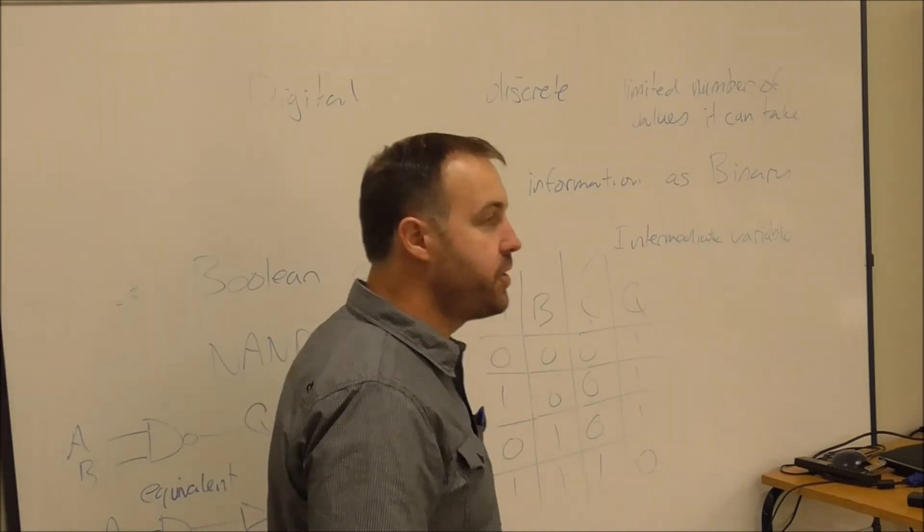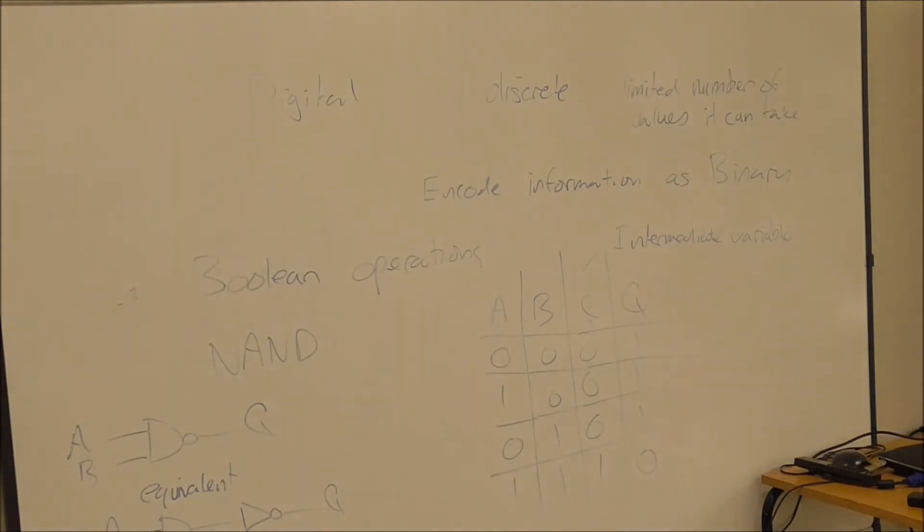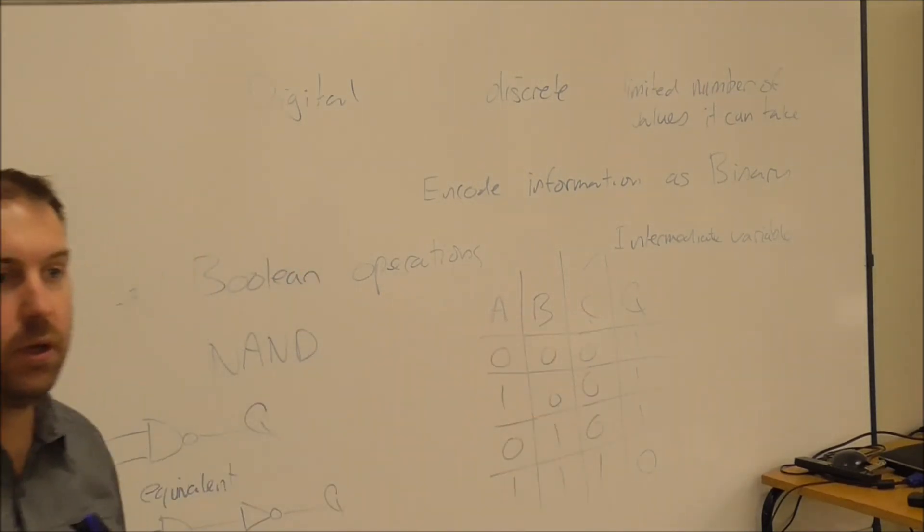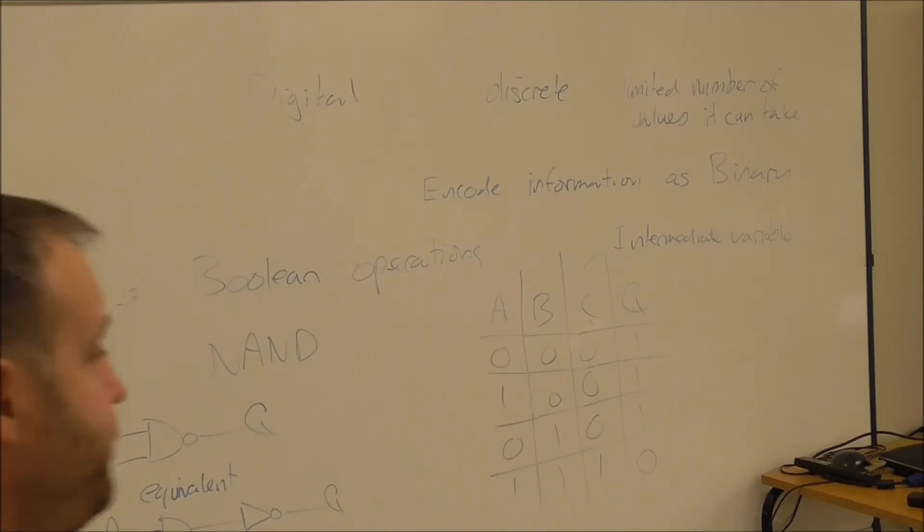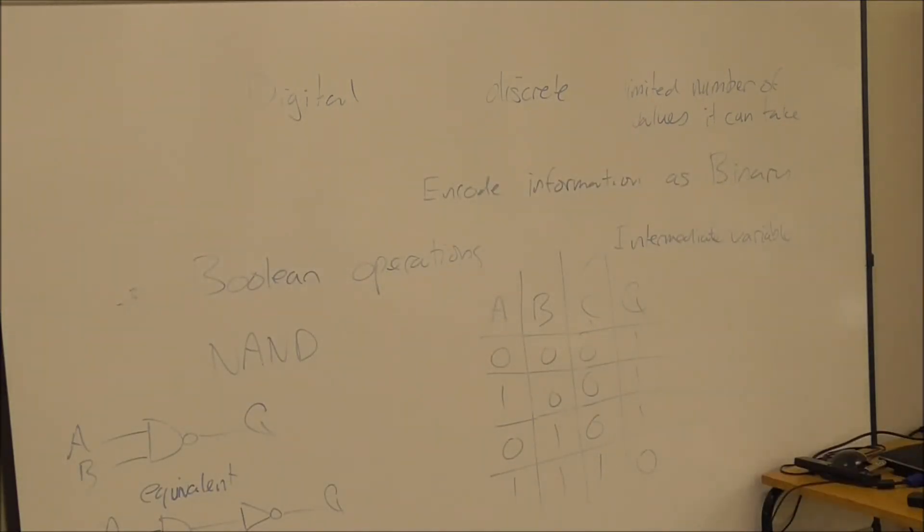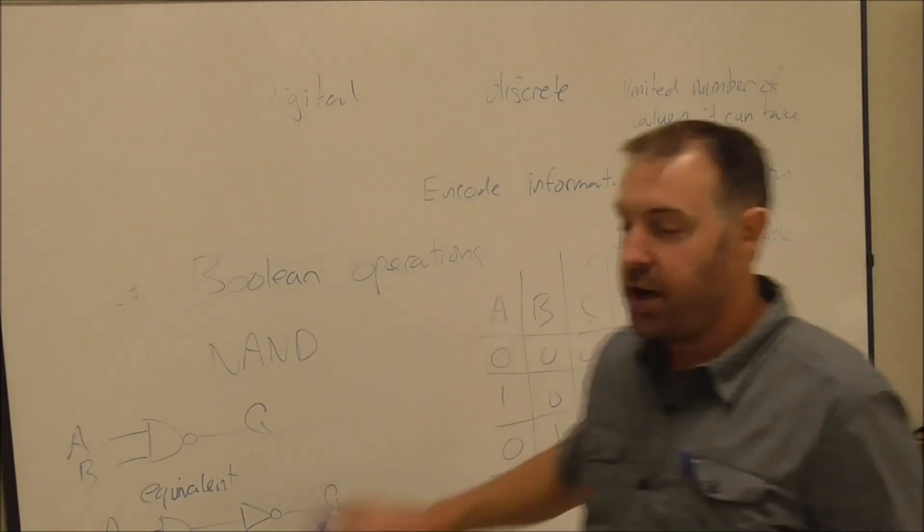Now when you're asked to draw a truth table and showing the output logic, it's quite often convenient to draw the intermediate variables to show you how to arrive at the truth table. But you don't have to necessarily. So for a NAND gate, I don't have to worry about that intermediate variable C because I don't necessarily even need to know that it's there.